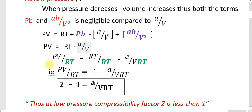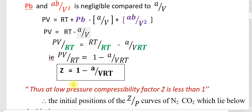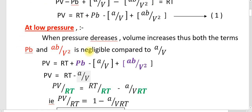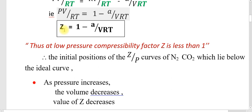Dividing all terms by RT: PV by RT equals 1 minus A by V RT. We know that PV by RT equals the compressibility factor Z. Therefore, Z equals 1 minus A by V RT. At low pressure, the compressibility factor Z is less than 1.